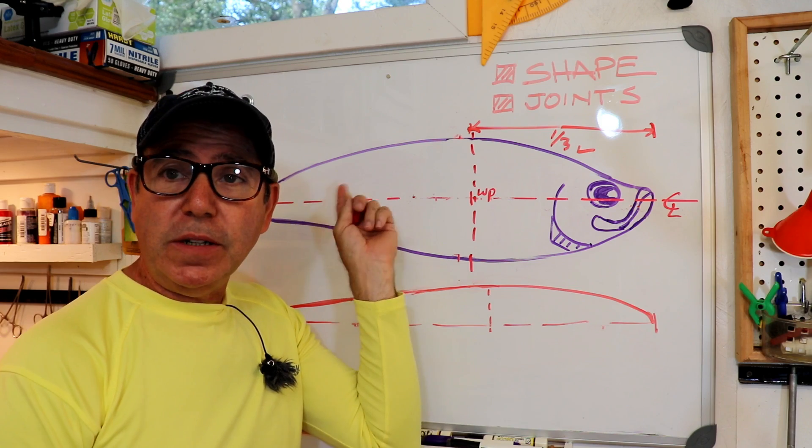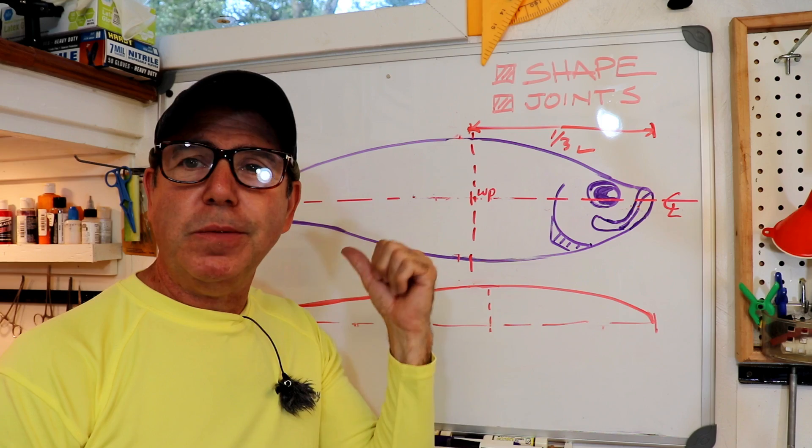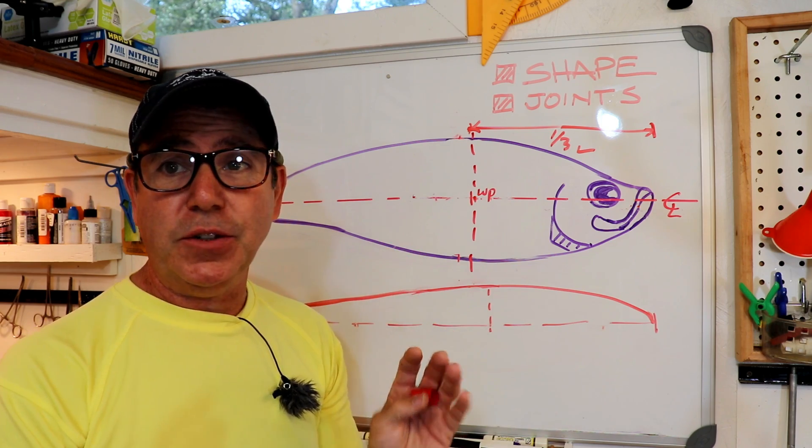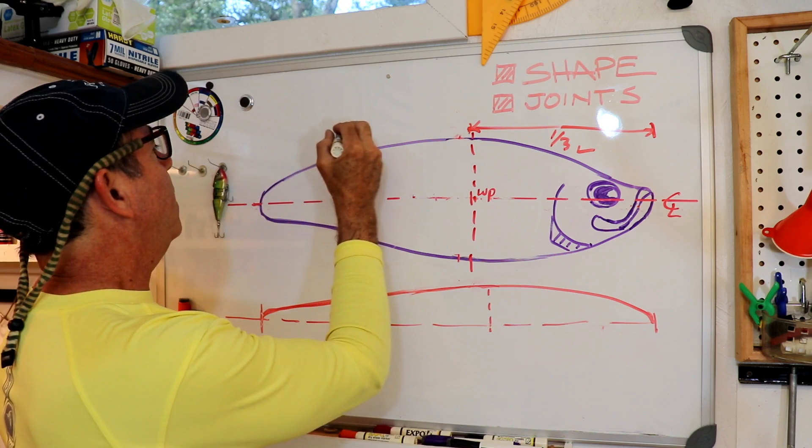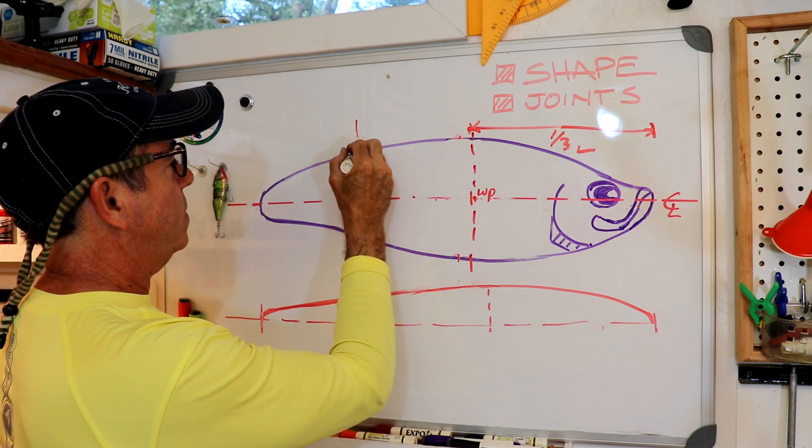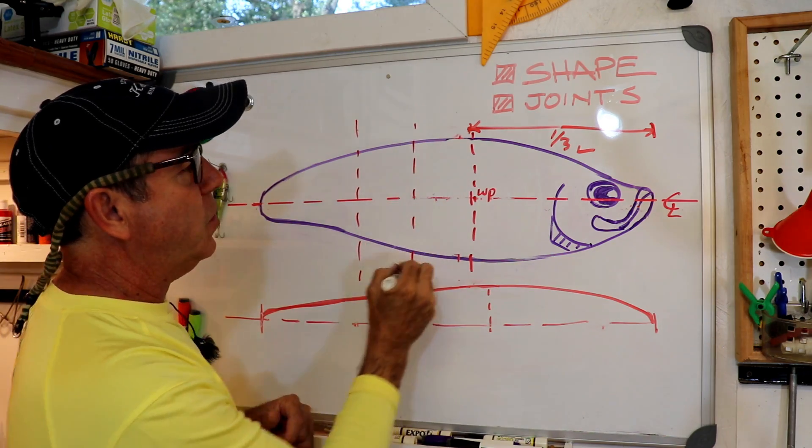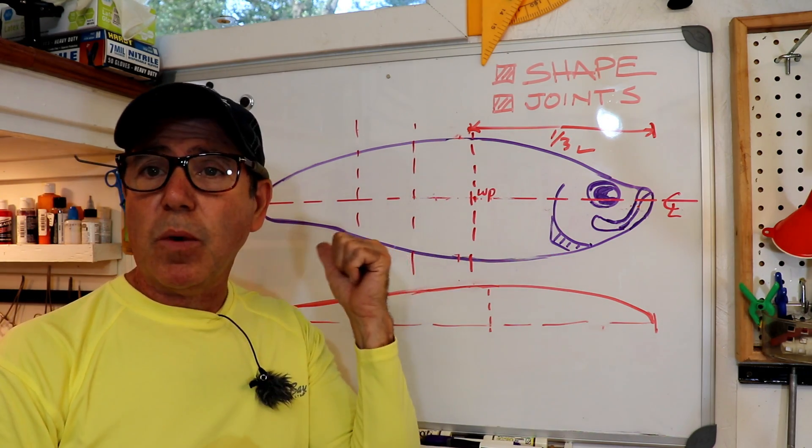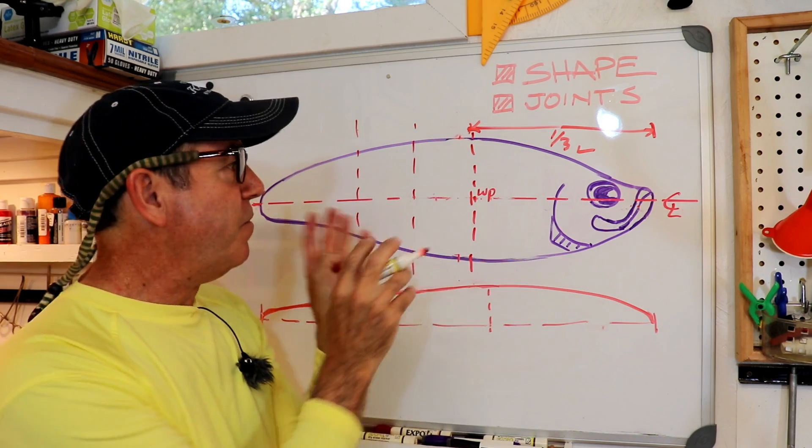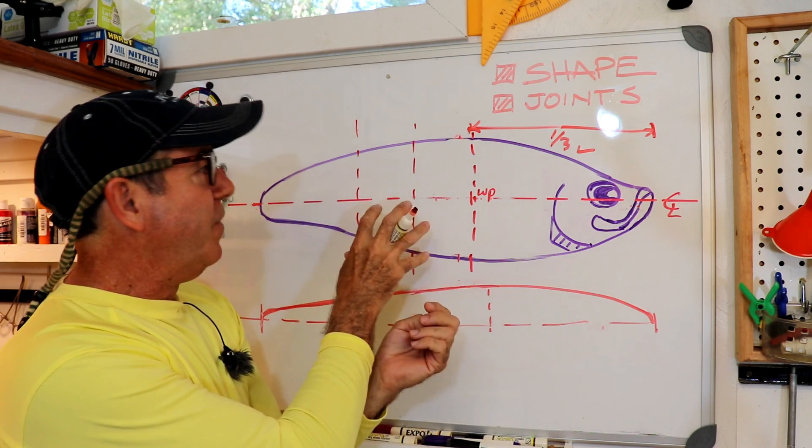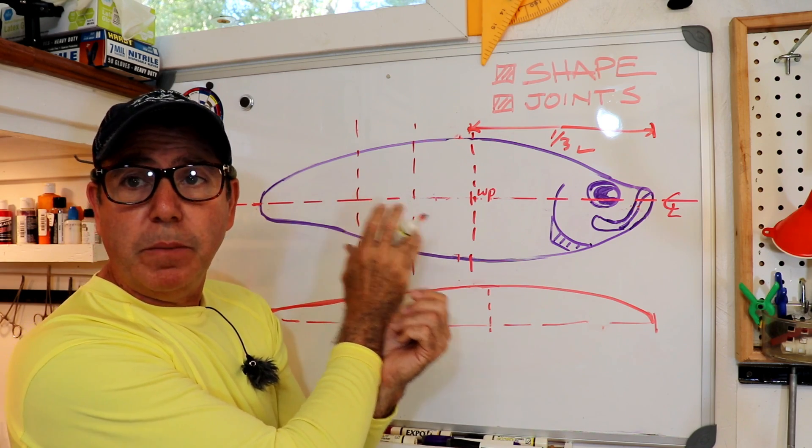For the next two joints you can do a couple different things. You can just evenly space them in the amount of lure that you got left, or you can continue the rule of thirds. That's what I like to do, it tends to work really well. What that means is I'll come in a third and then I'll divide what's left in two, and those are going to be where my joints are going to be.